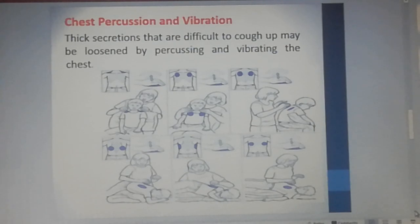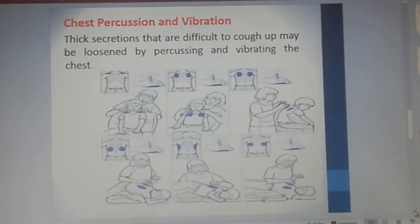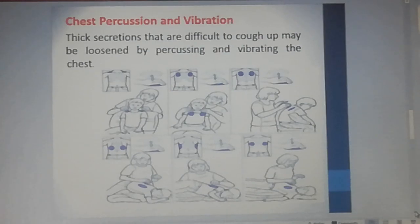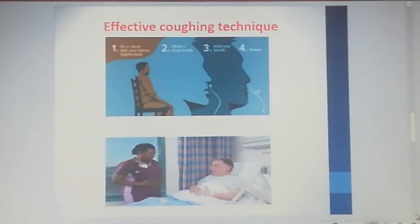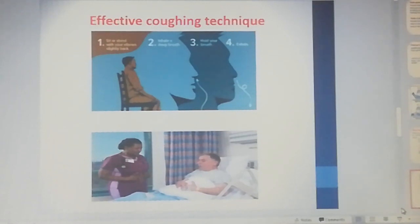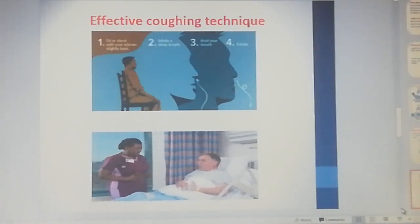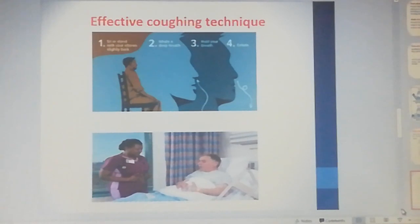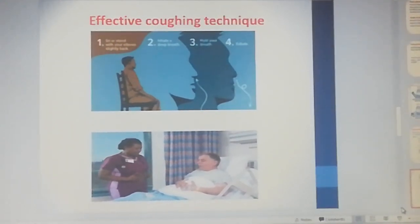Chest percussion and vibration: thick secretions that are difficult to cough up may be loosened by percussion and vibration of the chest. For effective coughing technique, instruct the patient to sit, take a deep breath, then exhale deeply and cough two or more times during one expiration. When the patient has had surgery, they should support the surgical site while coughing.